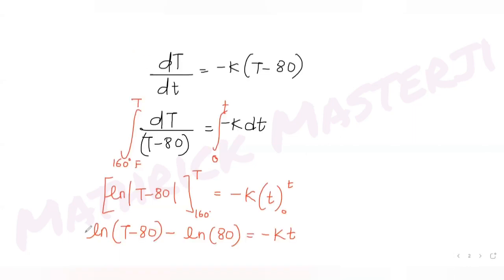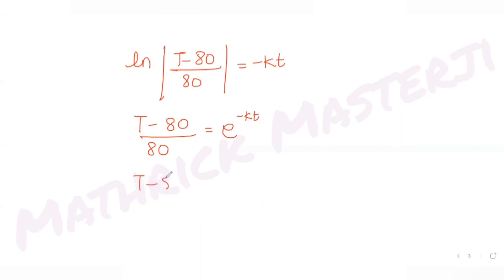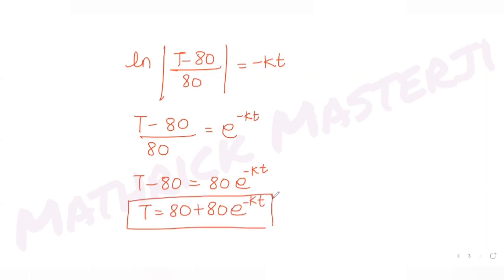Using the logarithm property ln(a) minus ln(b) equals ln(a/b), this becomes ln((T minus 80) / 80) equals minus kt. Taking the exponential of both sides, (T minus 80) / 80 equals e raised to minus kt, so T minus 80 equals 80 times e raised to minus kt. Therefore T equals 80 plus 80 times e raised to minus kt.